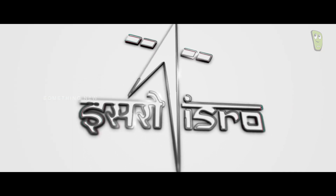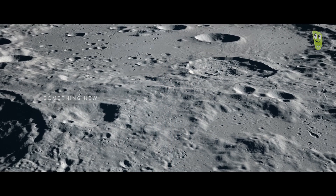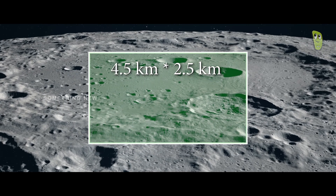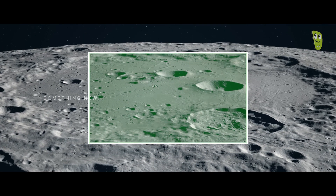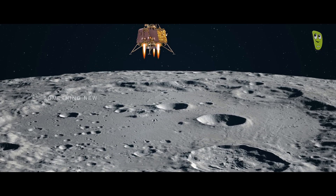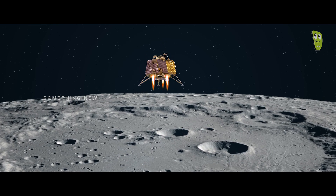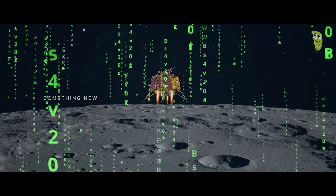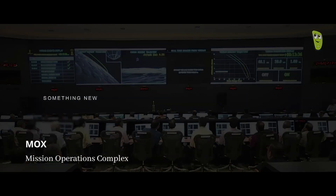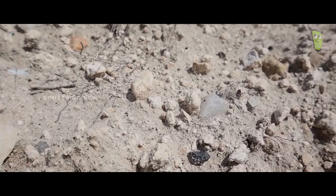ISRO learned from Chandrayaan-2's experience. For example, the landing site's dimensions changed from 500 square meters to 4.5 km by 2.5 km for Chandrayaan-3, allowing more fuel due to the increased distance. Communication was improved by using the orbiter in case of lander communication loss. Software and hardware were updated, and the mission is continuously monitored by the MOX team.